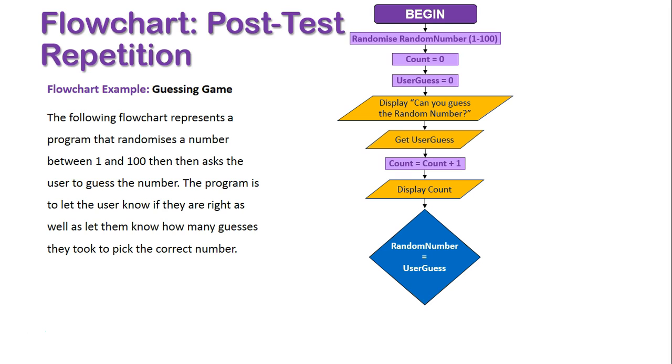Does random number equal user guess? If it doesn't, it's going to be false, and we go back to get the user guess again. And there's our body of the loop, and loop set up, in our actual flowchart.